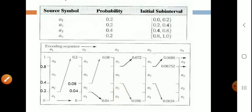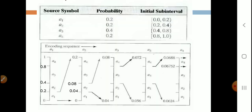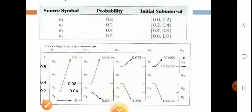This completes the very first step — our range has been divided. For Step 2, we expand the first letter to be coded along with the range. The first letter is A1, so we expand A1. Its range is 0 to 0.2, so we expand from 0 to 0.2.